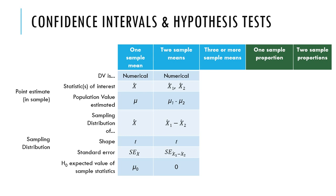When you have two sample means, the setup is really similar except that you have two population and sample statistics. You've got mean one and mean two from your sample, and the population value you're estimating is the difference between the population mean for group one and the population mean that sample two came from. The sampling distribution is the distribution of differences between two sample means, the shape is T, the standard error is the standard error of differences, and the expected value under the null hypothesis is zero.